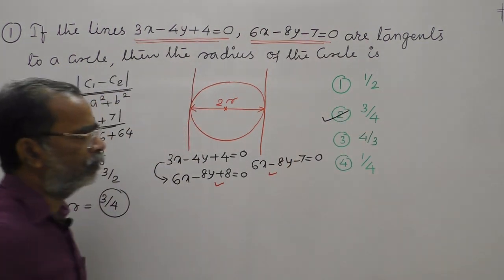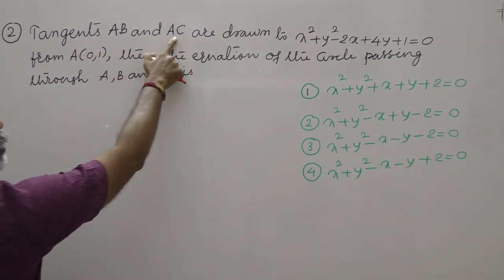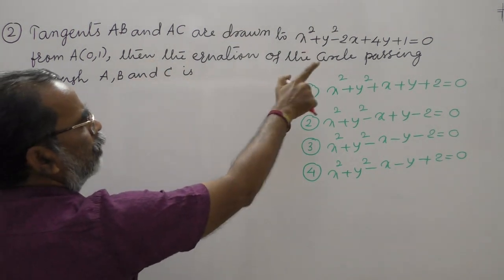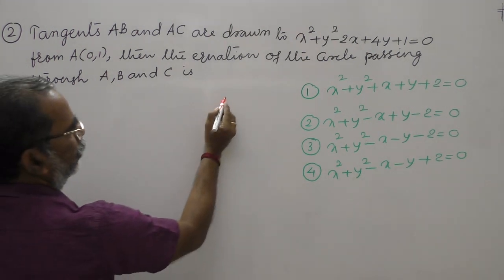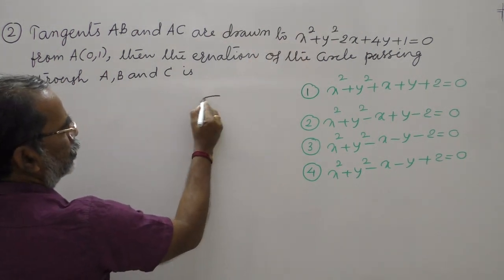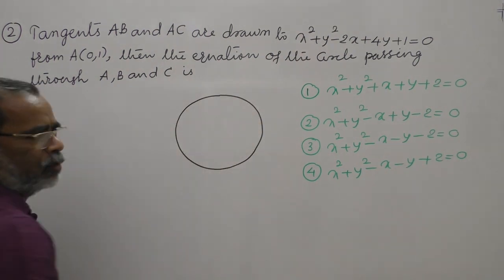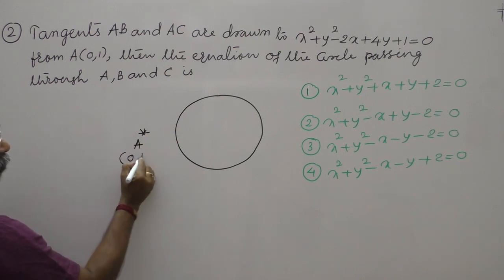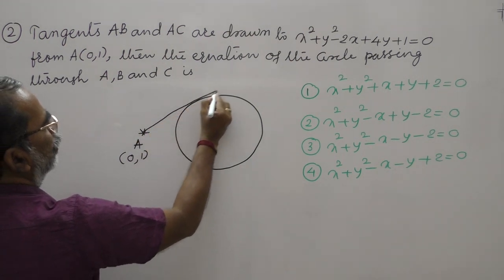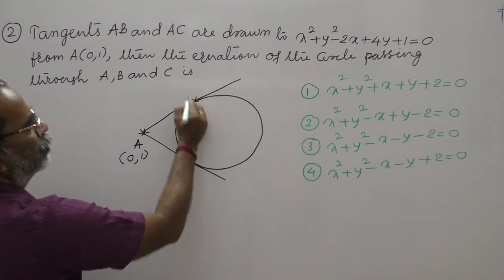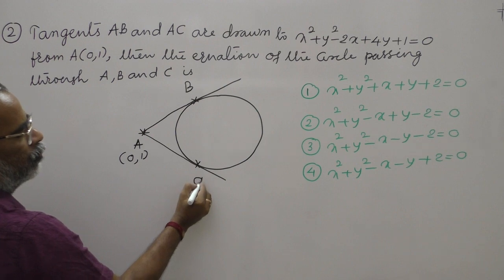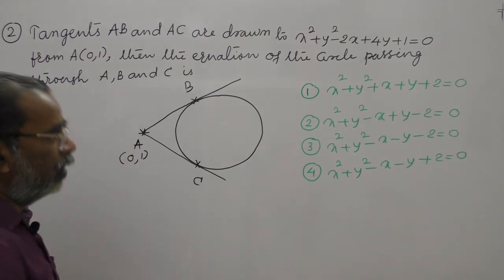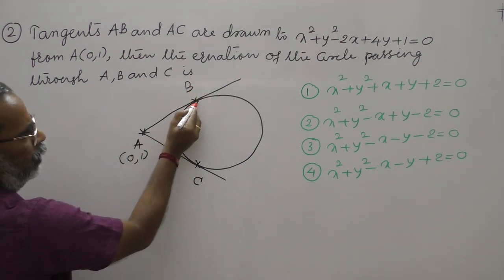Second question: tangents AB and AC are drawn to a circle from a point capital A at 0 comma 1. The equation of the circle passing through A, B, C is asked. Here a circle is given. From the external point capital A (0 comma 1), tangents AB and AC are drawn to the circle — AB meeting the circle at B and AC at C. The equation of the circle passing through A, B, C is what he asked.